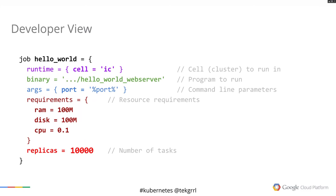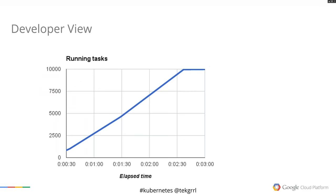This is a configuration file, or at least part of one, that a developer would submit when they want to run a job. They go to the command line, emit some commands, pass in the configuration file, and it gets sent out to our cluster scheduler called Borg. And this happens: after about two minutes and 40 seconds, we have about 10,000 of these running tasks — 10,000 copies of this binary specified within the configuration file.